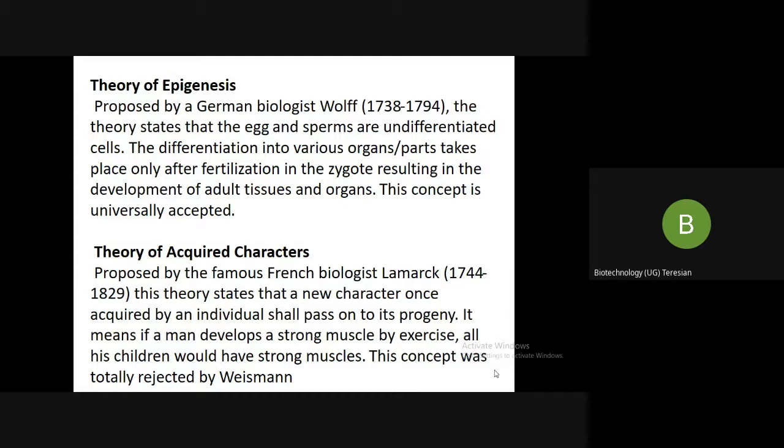The theory of acquired characters, proposed by the French biologist Lamarck, states that a new character, once acquired by an individual, shall pass on to its progeny. It means that if a man develops strong muscles by exercise, all his children would have strong muscles. But later on, this concept was totally rejected by Weismann.